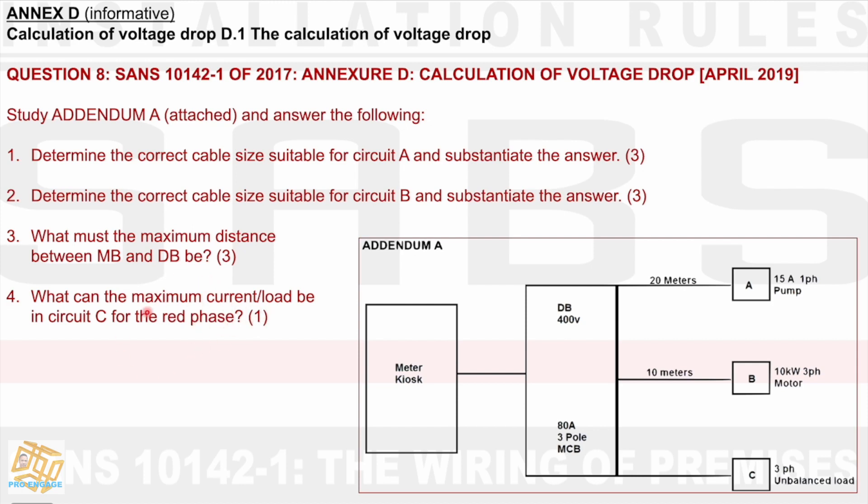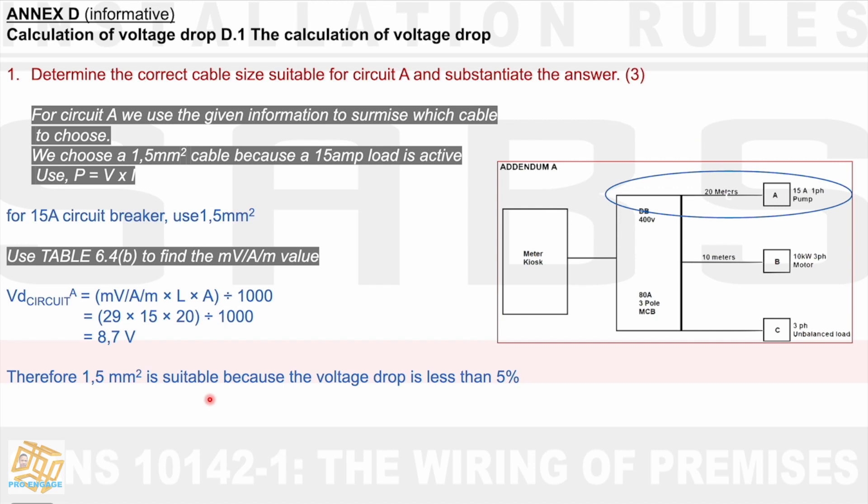For one mark it's going to be a simple formula or simple derivative. We're going to just assume here or make up a formula which is a standard thing. Let's see where this calculation takes us. Determine the correct cable size suitable for circuit A and substantiate the answer. For circuit A, we use the given information to surmise which cable to choose. And we choose a 1.5 mm² cable because a 15A load is active. I understand that the maximum circuit breaker for 1.5 mm² cable is 15A. Here they give us a 15A pump. We say that circuit is going to operate on max. We say we use 1.5 mm².